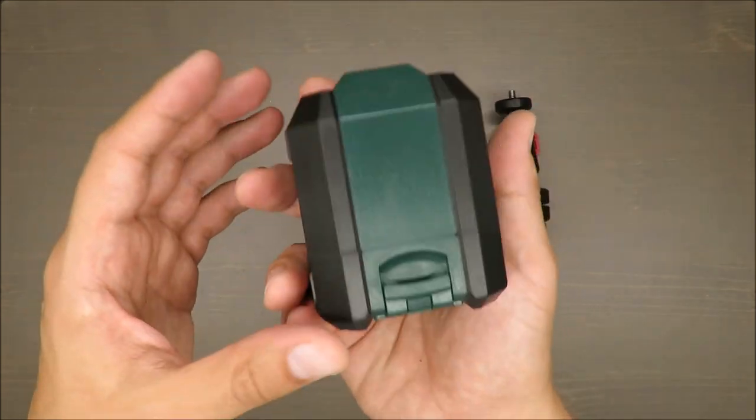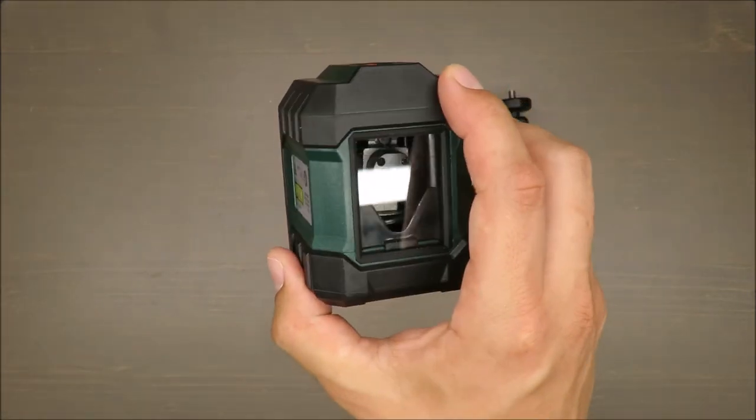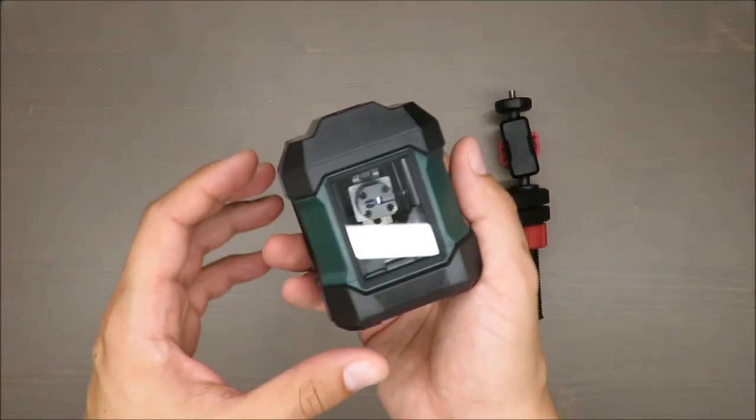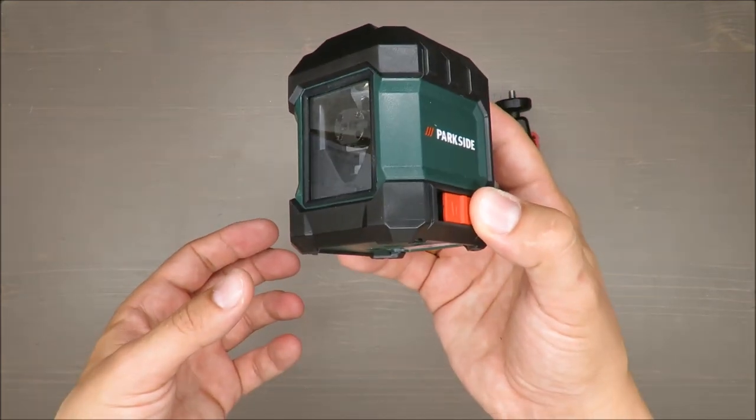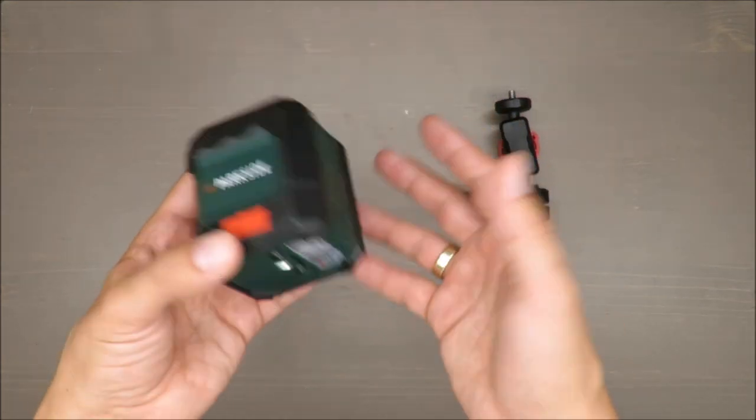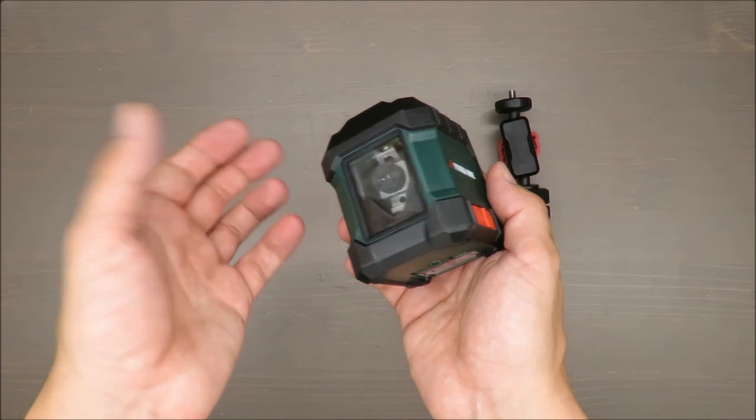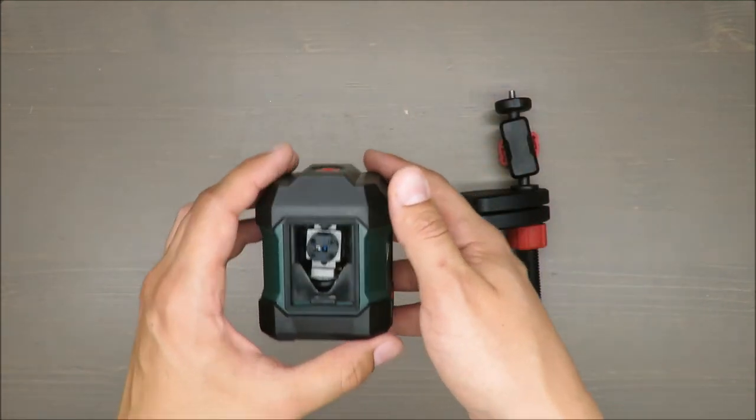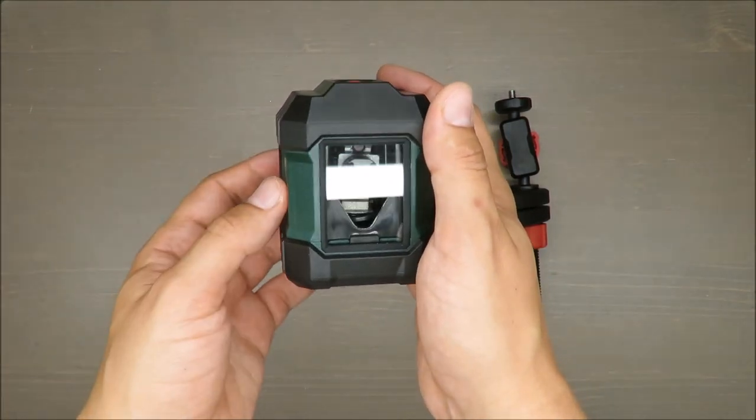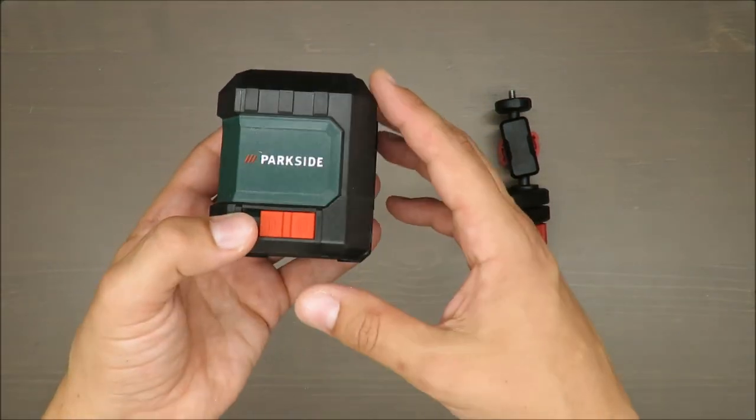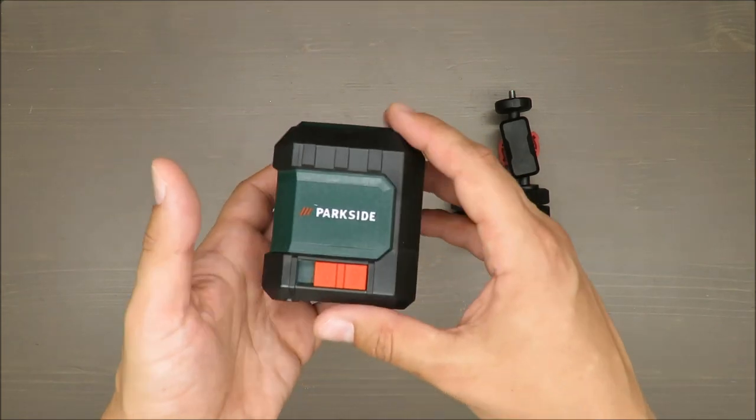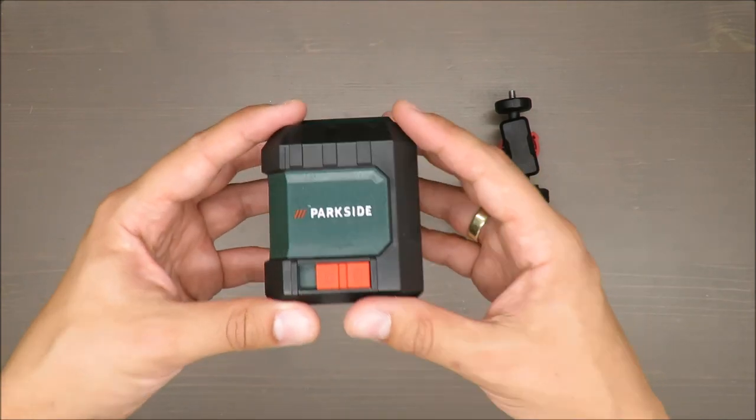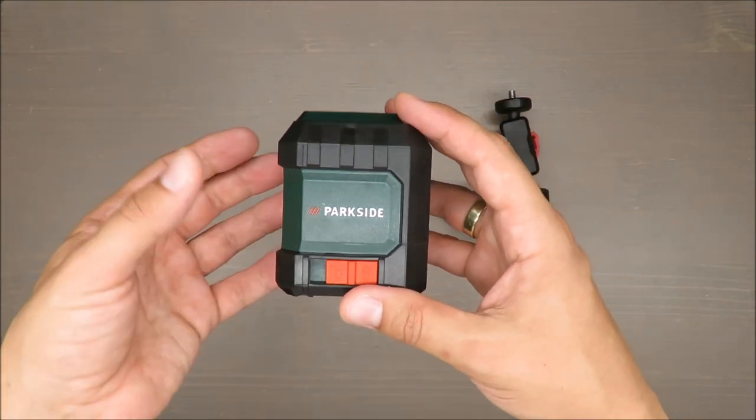But if you want to know something more, stay with me. So what you are paying for: Crossline laser, simple and precise projection of cross lines. You've got two lines so you are able to work properly. In terms of basic features, the basic working range is up to seven meters.